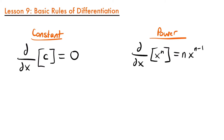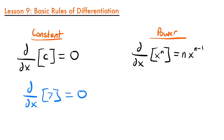This whole lesson is focused on these basic rules, and you'll see just how easy they really are. This is probably one of the best parts of calculus because it's really not too difficult. So let's look at our first rule, the constant rule, which says that when we take a derivative of a constant, we get zero. For example, the derivative of seven is zero because seven is a constant with no variables.